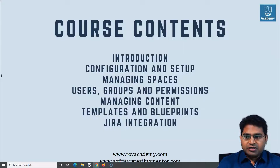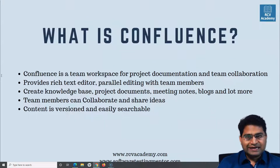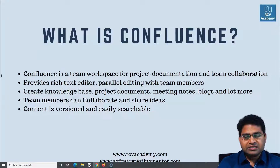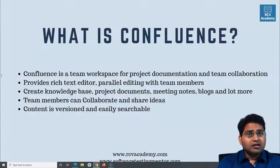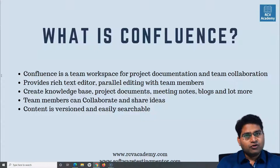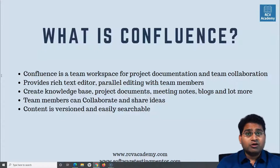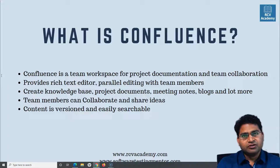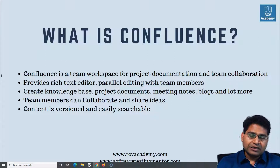Moving on, let's understand what exactly Confluence is. Confluence is a tool provided by the company Atlassian, which also provides Jira, both of which are heavily used in organizations. Jira is for agile project management and Confluence is the team workspace — for project documentation and team collaboration. You can think of it as a wiki, but it is much more powerful than a wiki.